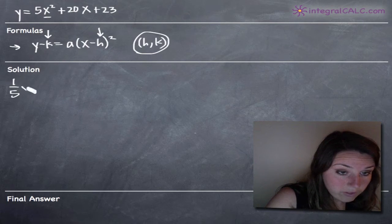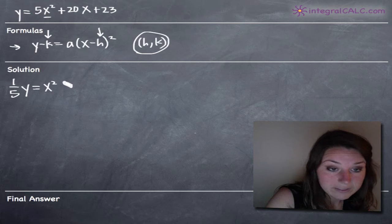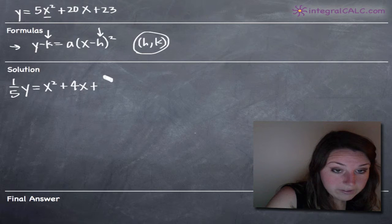So when we do that, we'll get 1 fifth y equals x squared, that coefficient 5 is going to cancel, plus 4x plus 23 over 5.